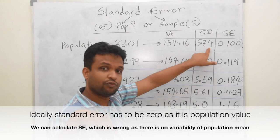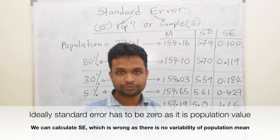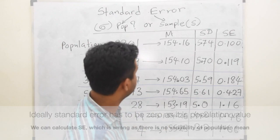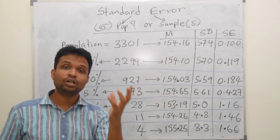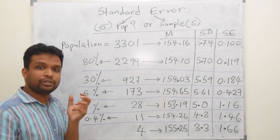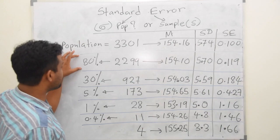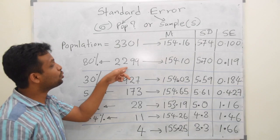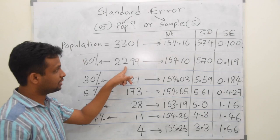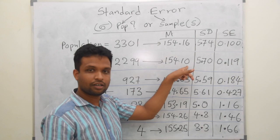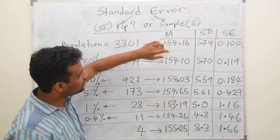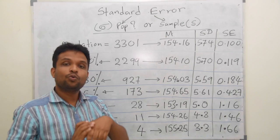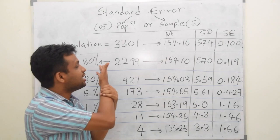Using the population formula, we can also calculate the standard error, which is 0.1 — very small. Our question is whether to use population or sample standard deviation. I took a random sample using statistical software: 80% of the 3301 individuals, which is approximately 2299. Among these individuals, the mean was 154.1 — almost the same. The difference is very small. When the difference is this small, why do we need to measure the total population? Even 80% is enough.